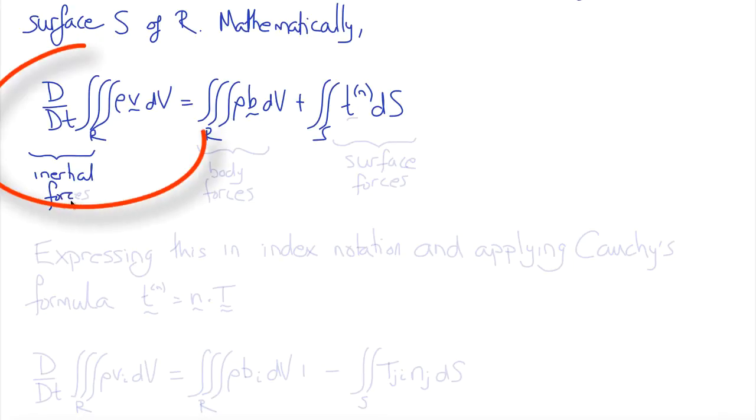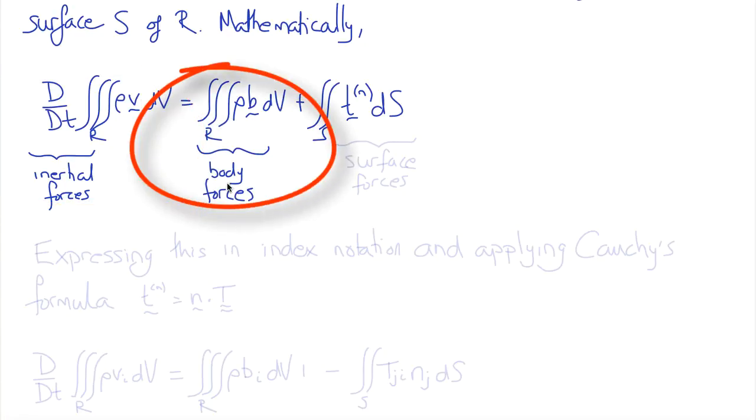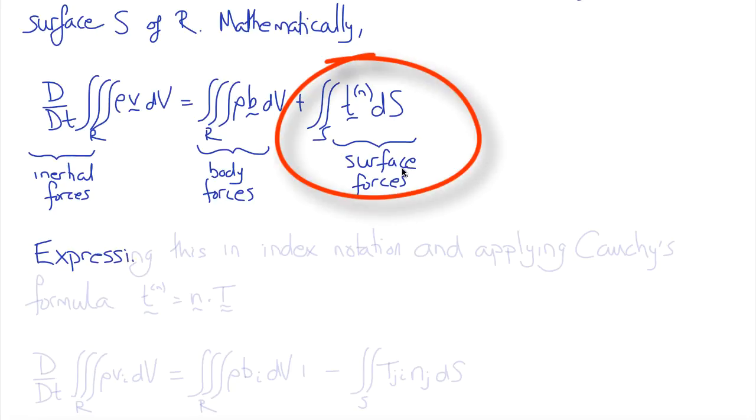The first term are the inertial forces, the rate of change of mass times velocity. The second term are the body forces, the integral of the body forces per unit mass times mass per unit volume over volume. The third term are the surface tractions, the integral of all the surface tractions over S.